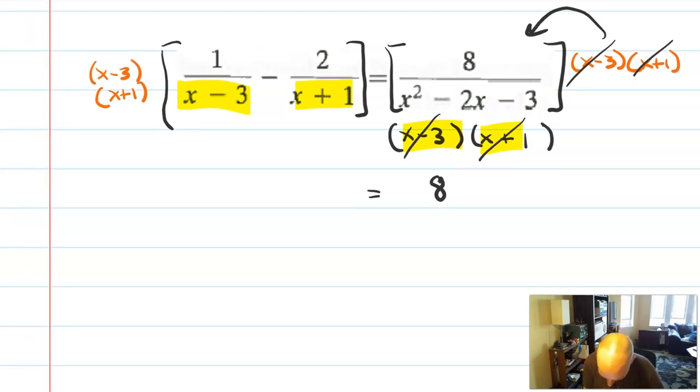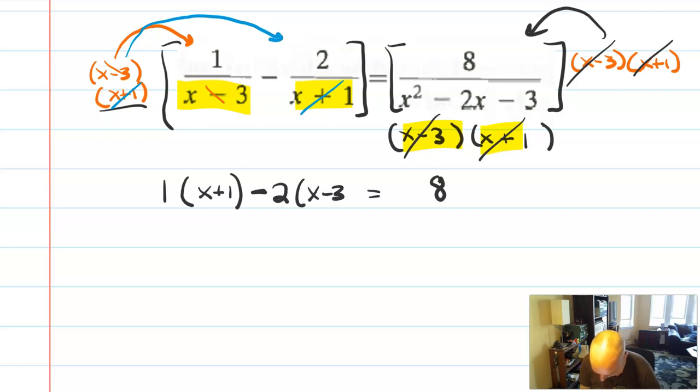On the other side, we have to do it in two steps. When we distribute to the 1, the x minus 3 cancels out, and you're left with 1 times what I didn't multiply by, or what didn't reduce out, x plus 1. Minus sign carries down. When you distribute this to the second term, the x plus 1's will reduce out, and we'll have a minus 2 times x minus 3. Again, simple linear equation. All we have to do is solve.